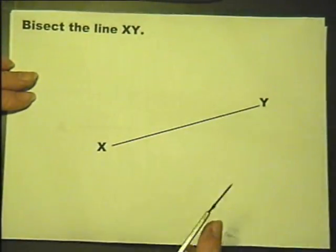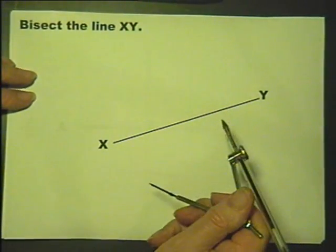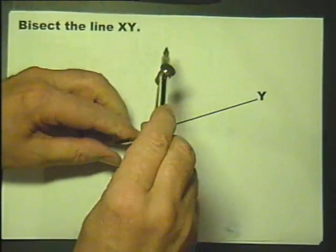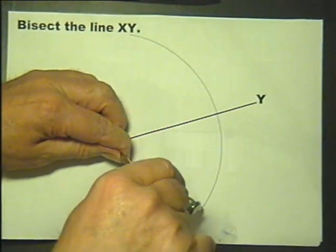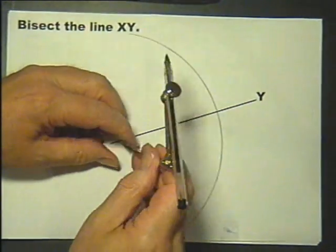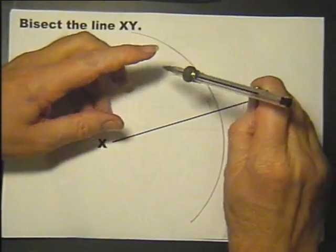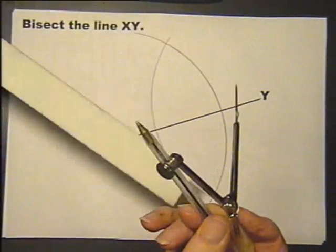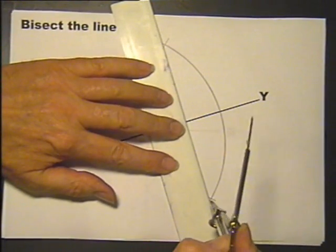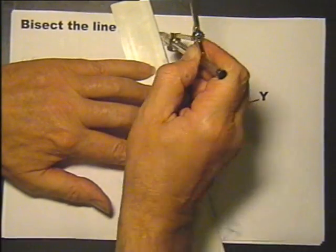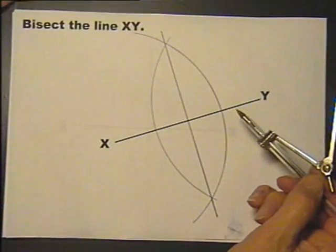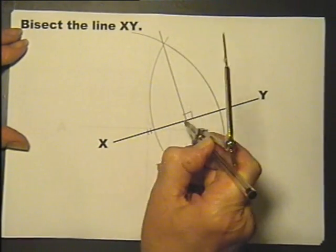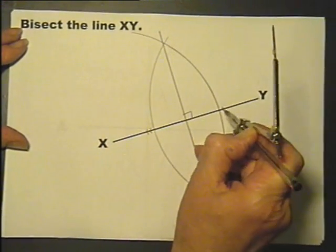Let's do that again just to rub the point in because it is very easy. Bisect the line XY. If you do it by measuring you get nothing. Open the pair of compasses to more than halfway, it doesn't matter as long as it's more than halfway. Keep the compass at the same radius when you stick it in the other end and draw another arc. If you now draw a line through where those arcs intersected, you have bisected the line in half at right angles.